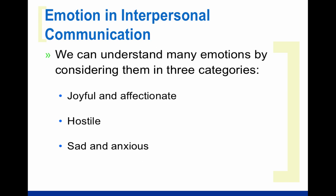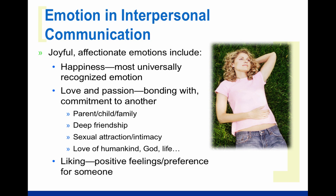The textbook categorizes emotion into three separate types: joyful and affectionate — what we consider to be positive emotions — and then hostile, and sad and anxious. The joyful and affectionate emotions include happiness. Happiness is the most universally recognized emotion. Happiness is a state of contentment, joy, pleasure, and cheer. And all over the world, people respond to happiness by smiling, laughing, being energetic.